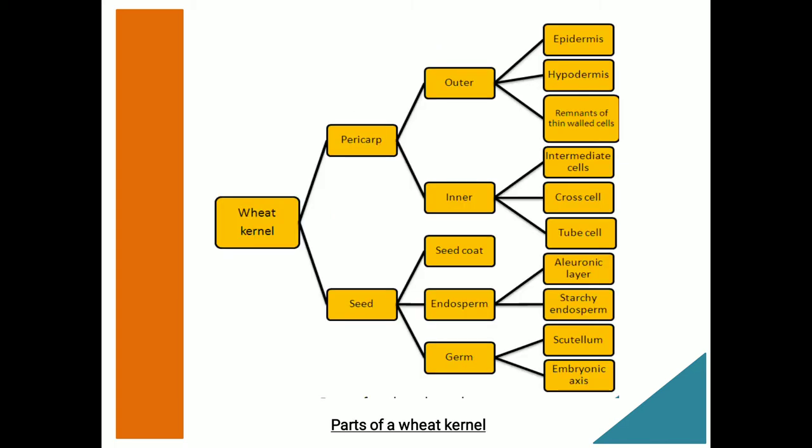This slide shows you the detailed structure or parts of a wheat kernel. Basically, we can divide the wheat kernel into two main parts: pericarp and seed. The pericarp itself has two different layers — outer pericarp and inner pericarp — and we can divide the seed into three different parts: seed coat, endosperm, and germ. All these layers will be covered in detail in the next slide.